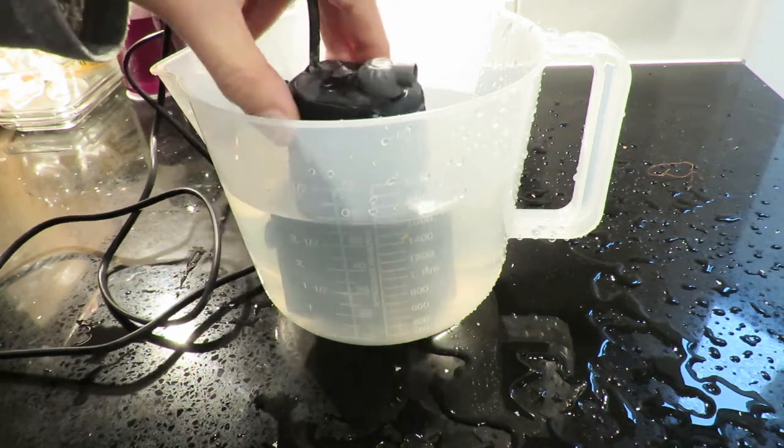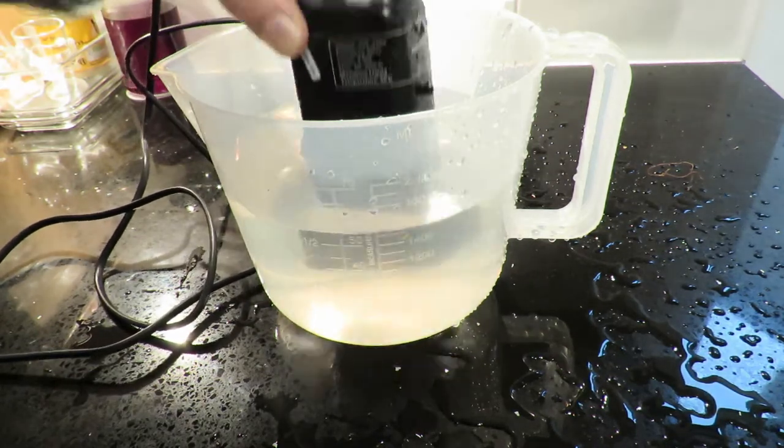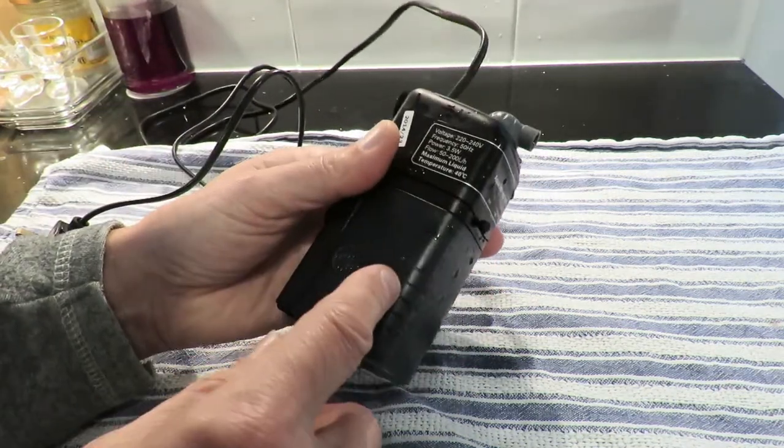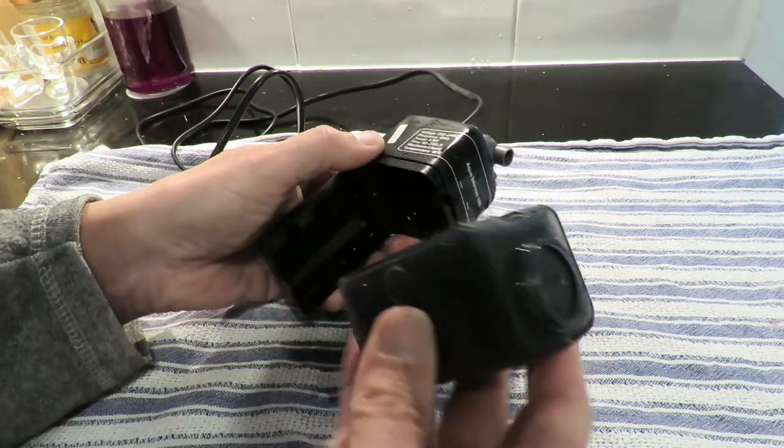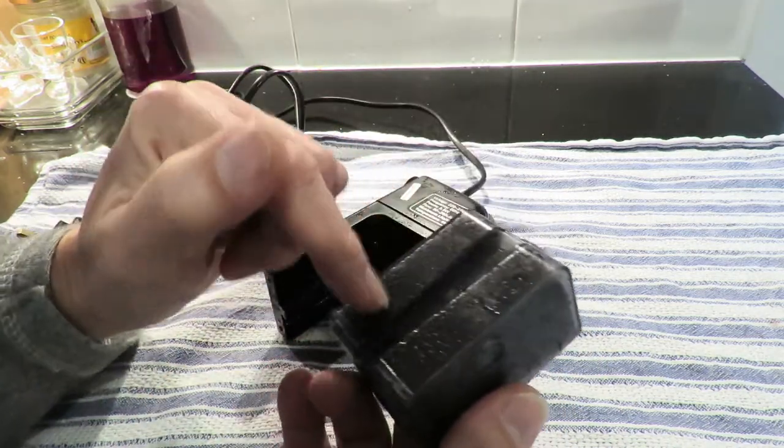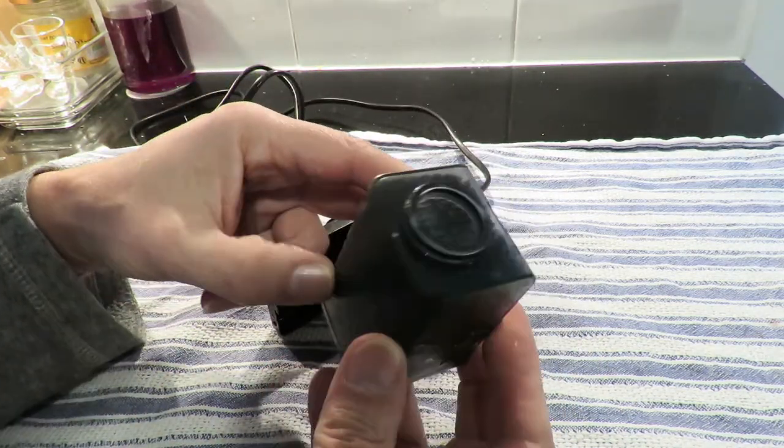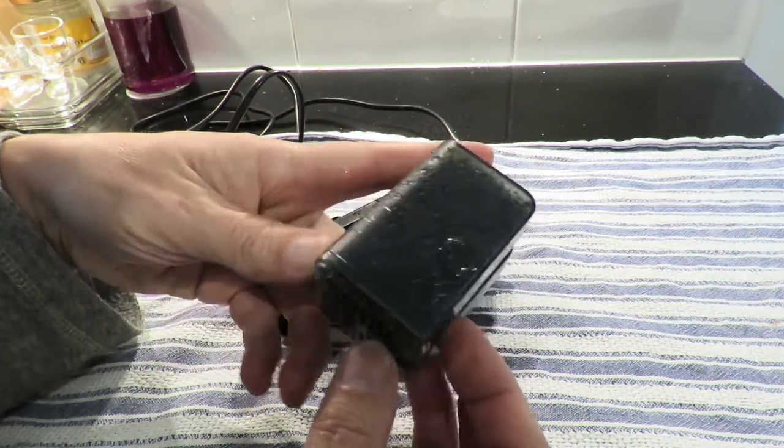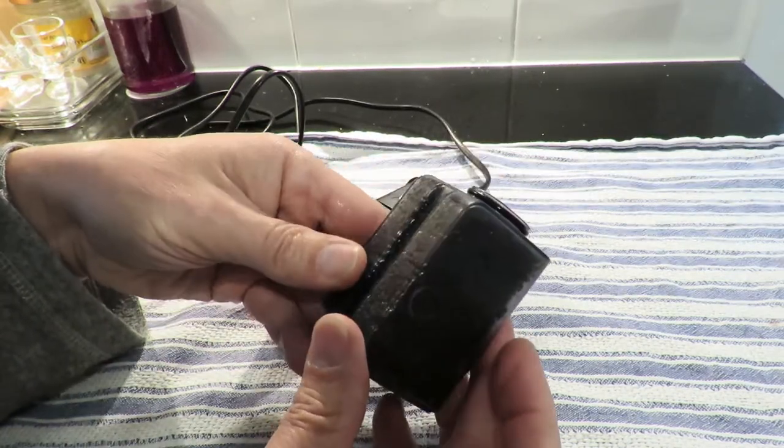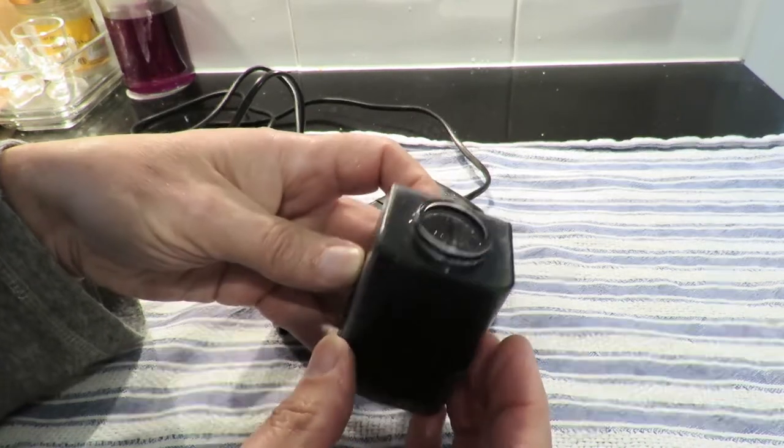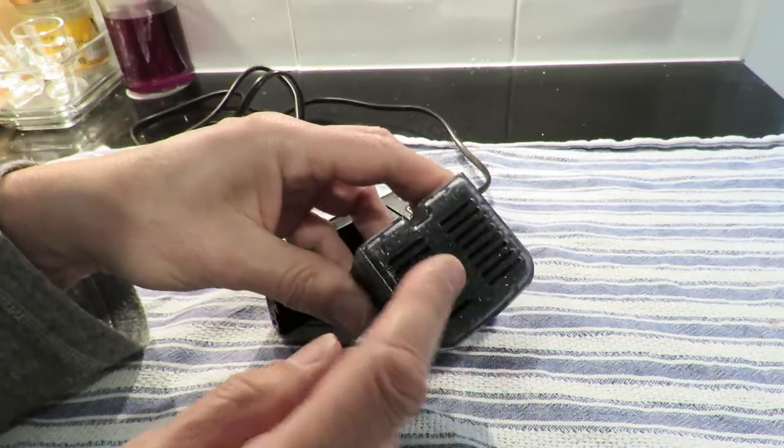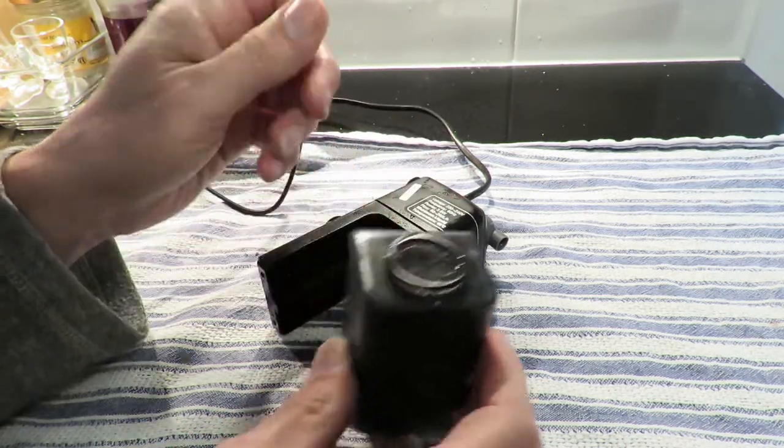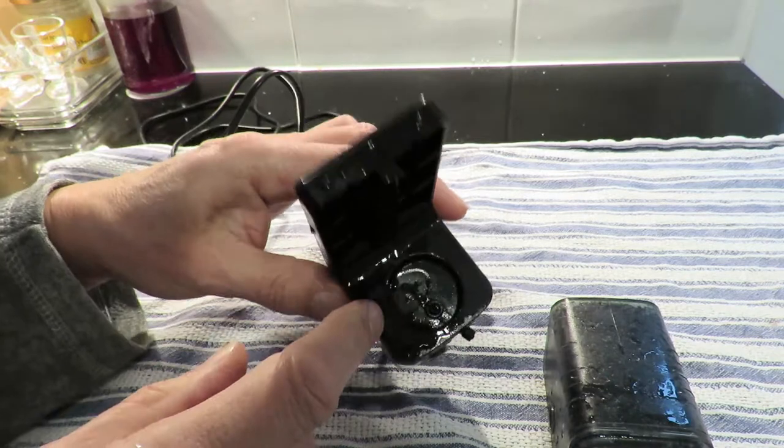But I'm still going to take it apart so we can have a look inside. I've unplugged it. First bit is just the filter on the bottom, and that just pulls out. That's some sort of gauze or foam that filters the bits out. Sucks it in the bottom there, comes out the top here, and then in the top there.